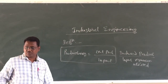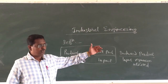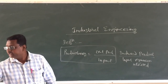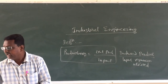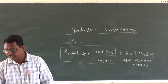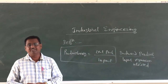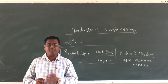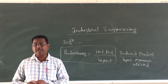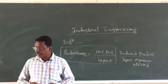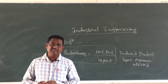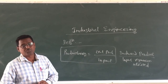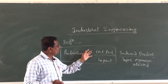In industry there are different types of productivities calculated in different ways. First is labor productivity: total output divided by labor input. Next is capital productivity: total output divided by capital input. Then material productivity: total output divided by material input. And energy productivity: total output divided by energy input. Productivity is the ratio of output divided by input — it tells you if manufacturing is on track. If productivity is less than 1, there is a problem.